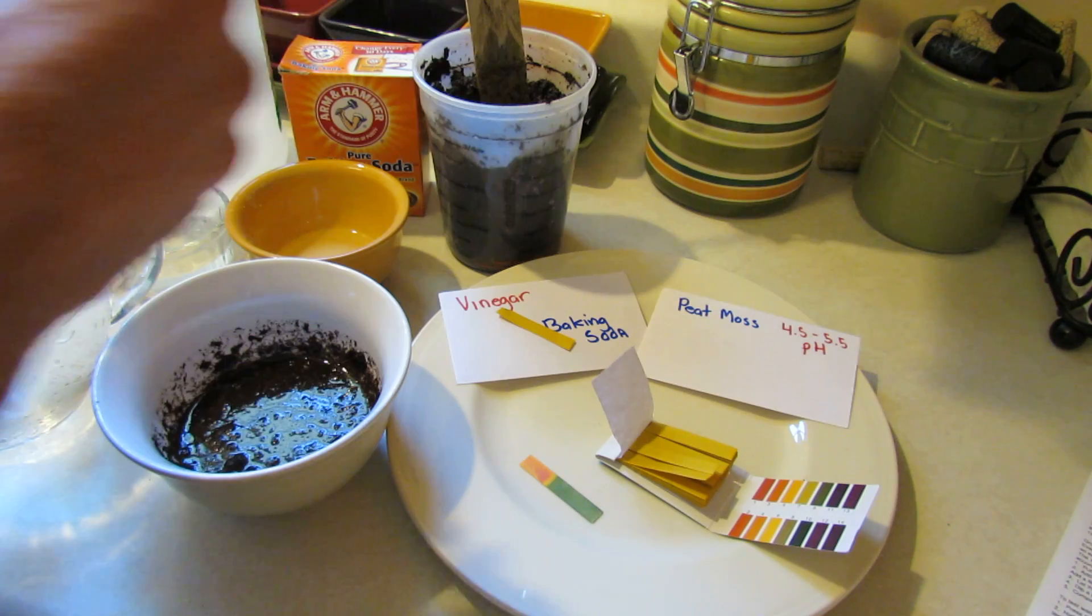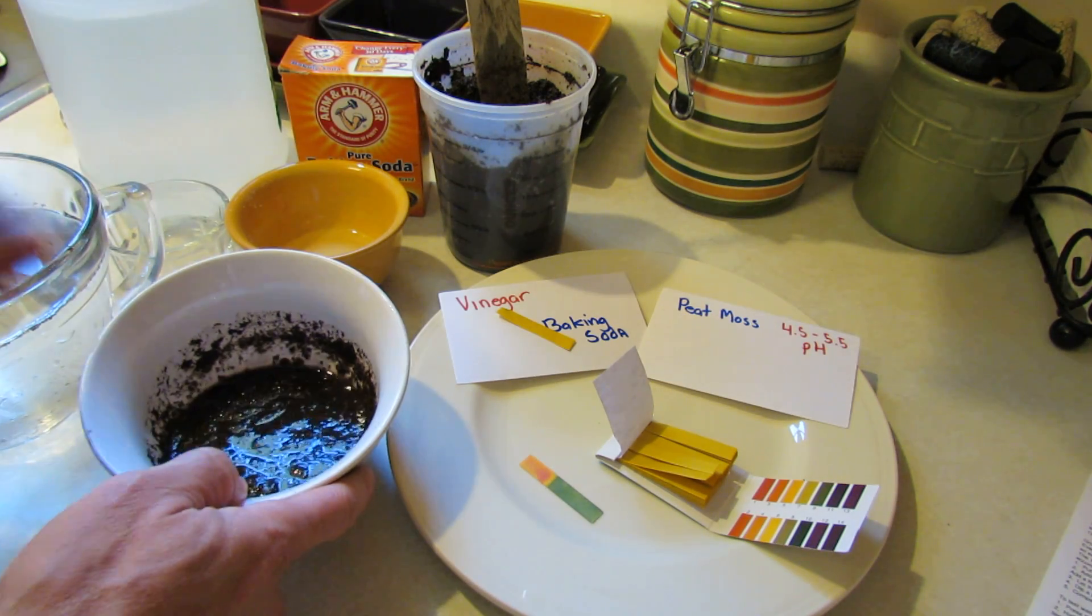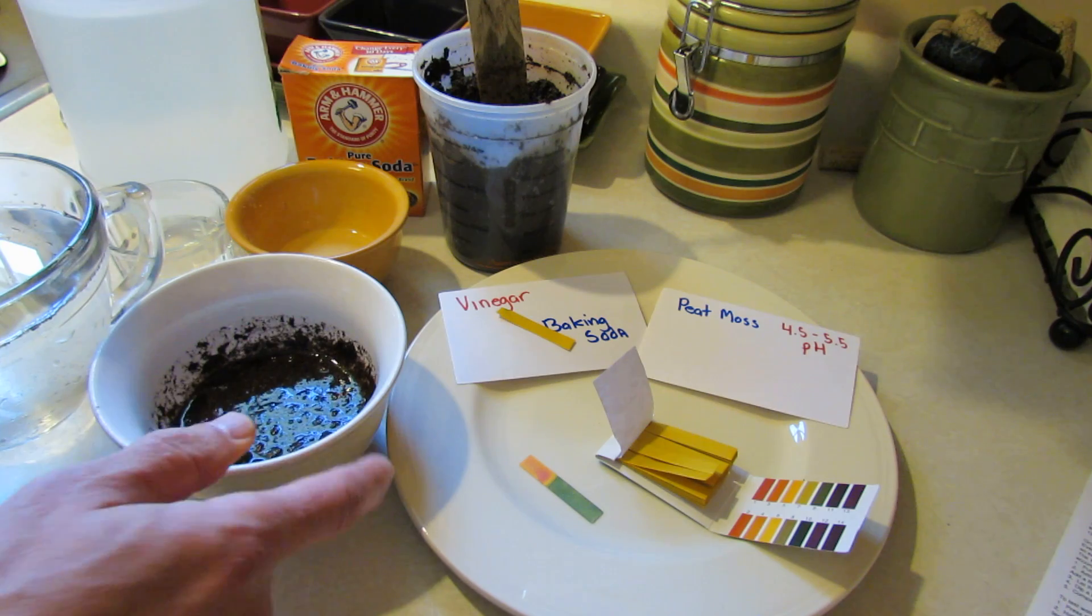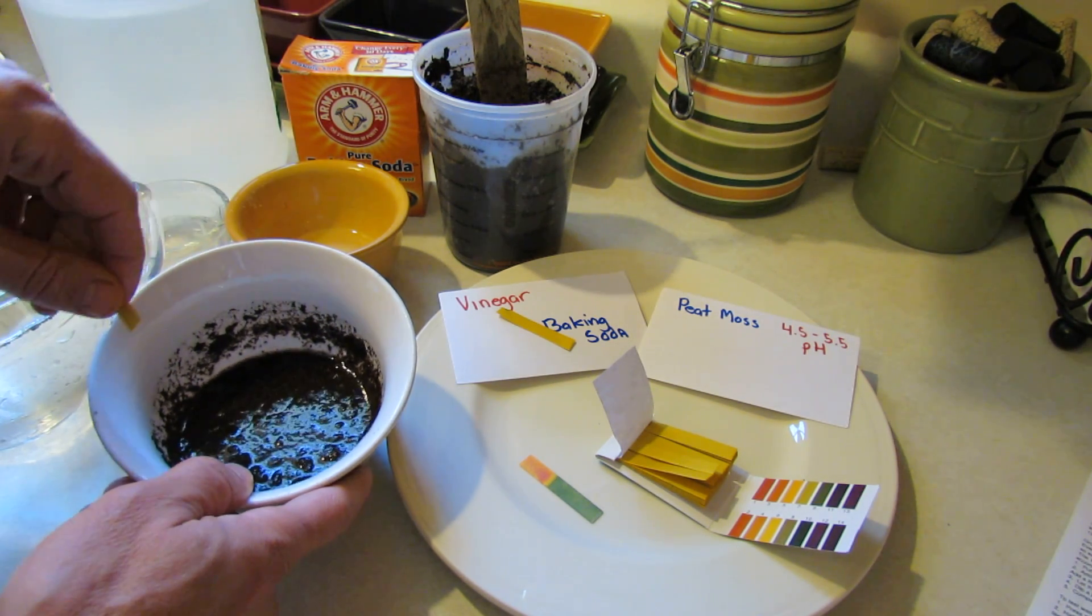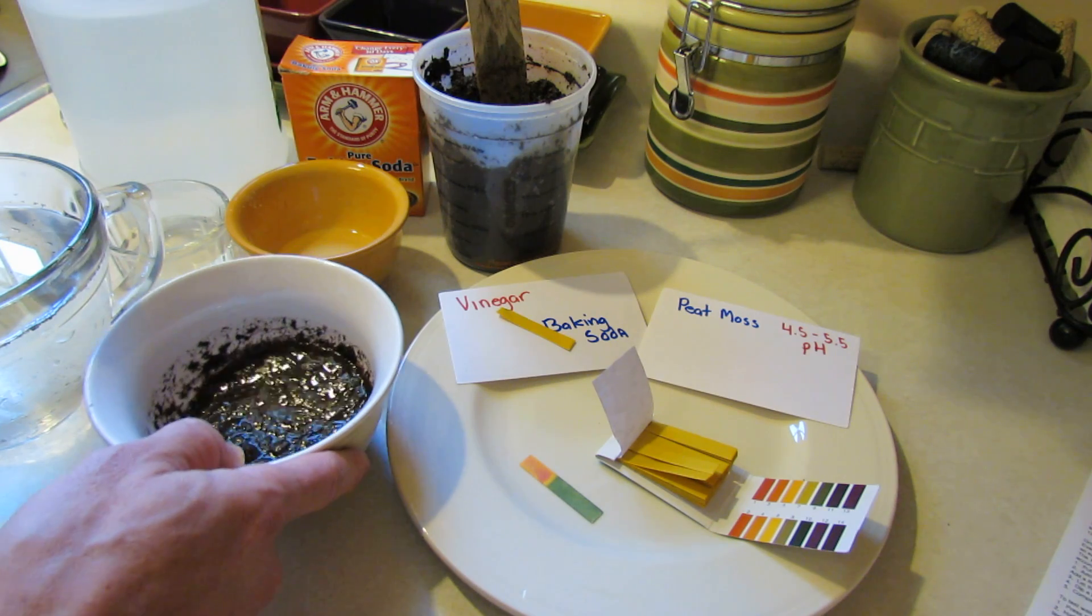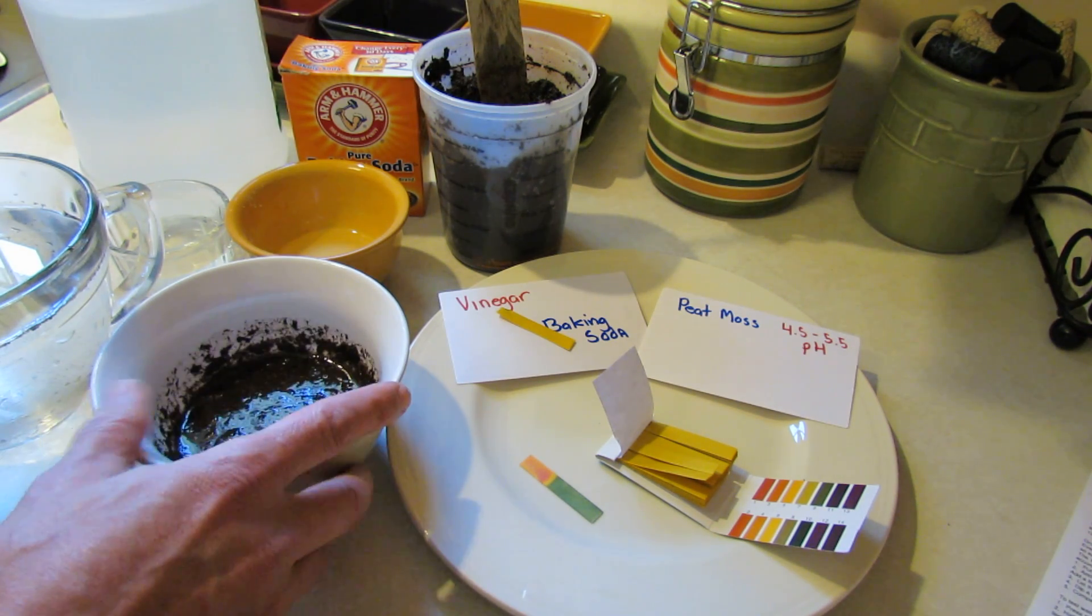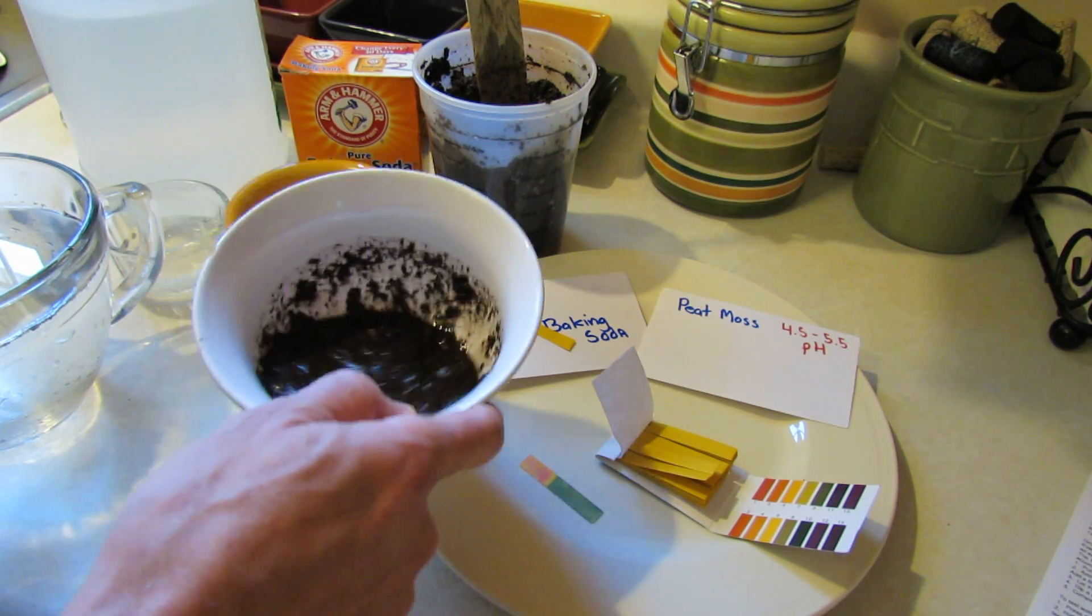So to set up the test, I'm using pure peat moss but this would be the same thing you would do with your garden soil. You want to put in one to two tablespoons of the soil or in this case peat moss into a bowl and add enough water so that it has the consistency of a milkshake.